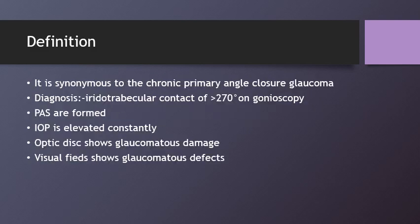Primary angle closure glaucoma is synonymous with chronic primary angle closure glaucoma. The diagnosis is made by iridotrabecular contact of more than 270 degrees on gonioscopy. Peripheral anterior synechiae are formed and IOP is constantly elevated. The optic disc shows glaucomatous damage and visual fields show glaucomatous defects.